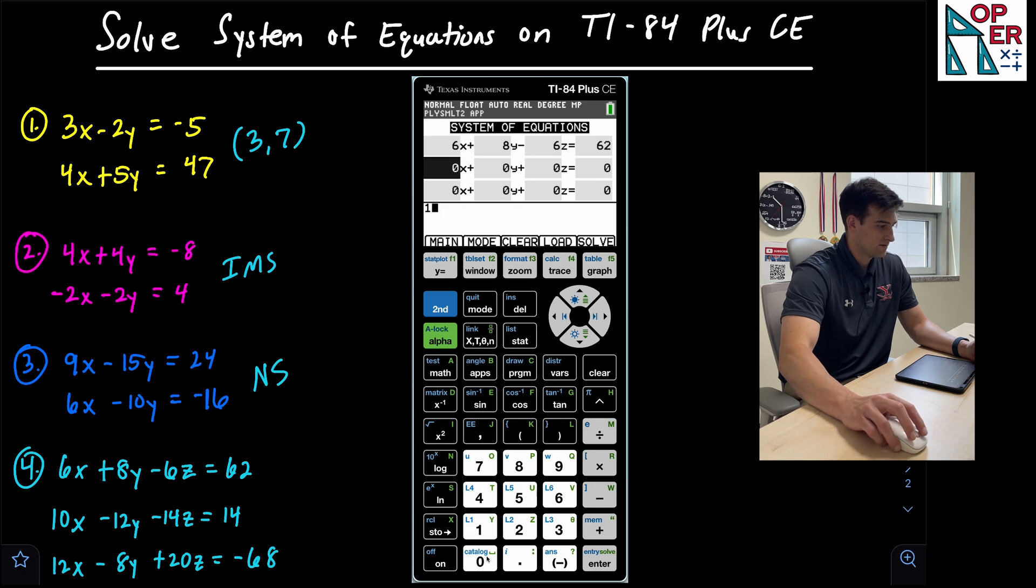Then we have 10X minus 12Y minus 14Z is equal to 14. And then we have 12X minus 8Y plus 20Z is equal to negative 68.